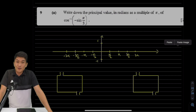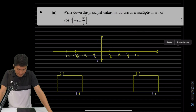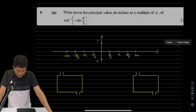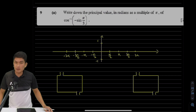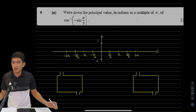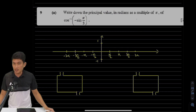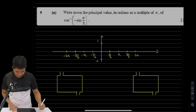Hello and welcome to question nine. In question nine we're being tested on principal value, which is under trigonometry. What is principal value? Let's take some time to understand why there is a need for such a thing called principal value. Let me first draw the cosine graph.